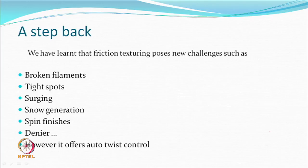We learnt last time that friction texturing has new challenges like broken filaments, tight spots, surging, snow generation, spin finish which may have to be specially designed, and control of denier. Of course, it does offer auto twist control.